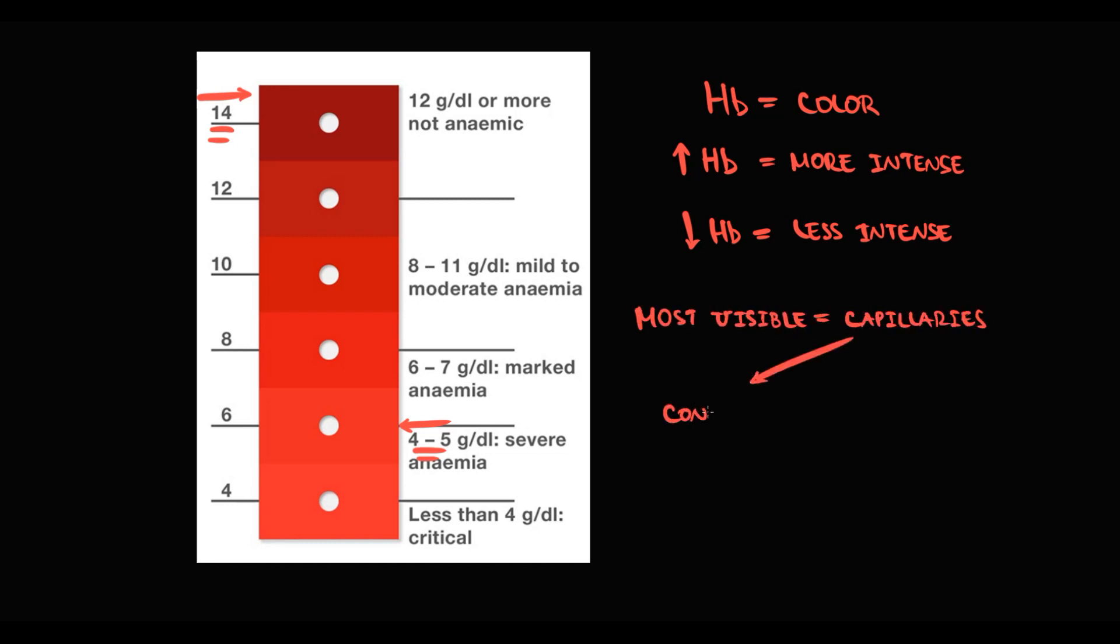And when blood moves through the capillaries in the sites where capillary beds are visible, and it's typically the conjunctiva, we can basically assess the color of the blood by the color of the conjunctiva. And if the level of hemoglobin in the blood is low, obviously the color of the blood becomes less intense and less bright. And conjunctiva in this case will be pale. And the same principle can be applied to the skin.